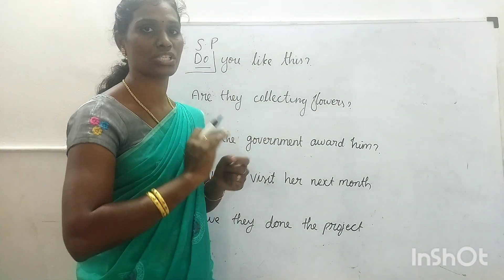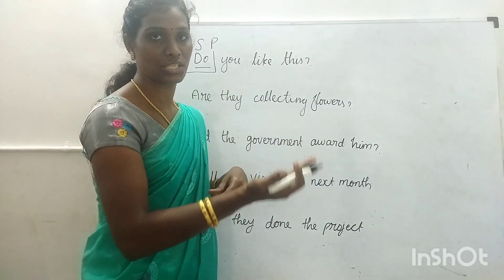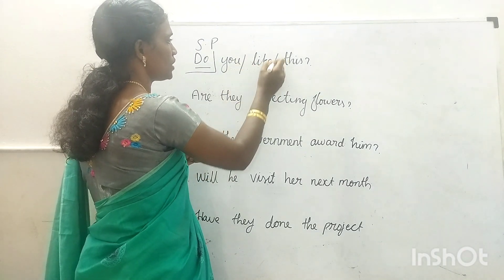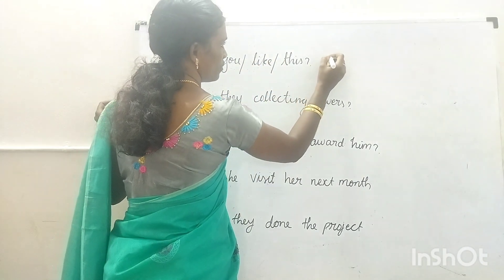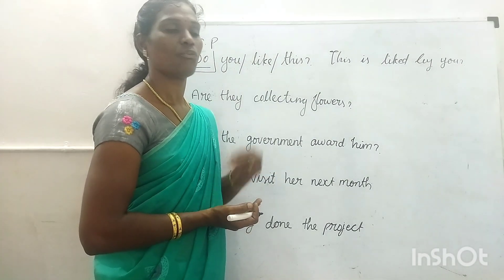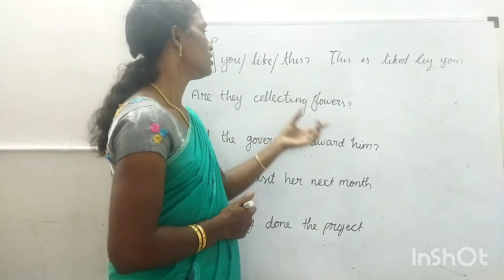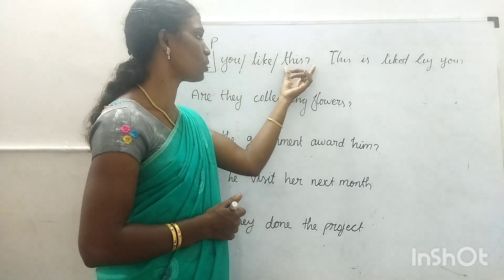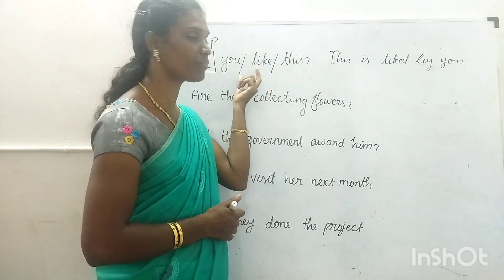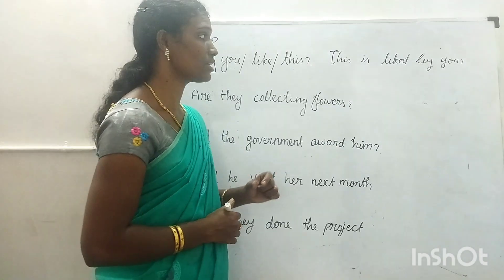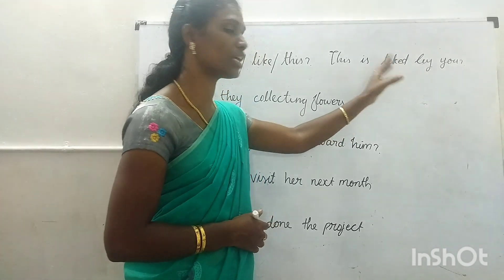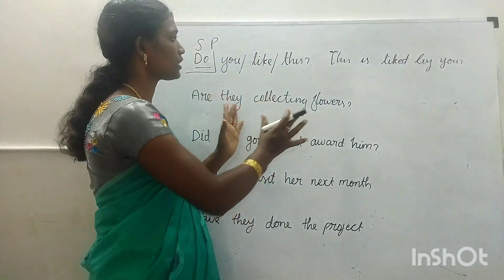Now this statement 'you like this' — change it into passive form. As we covered in the last class, the changes from active to passive are: subject will be changed into object, and object will change into subject. Then you include the 'be' form and change the verb into its third form. And finish with the word 'by'. These are all the instructions we have already learned.